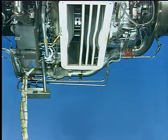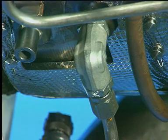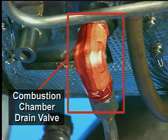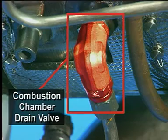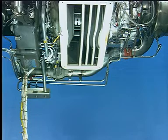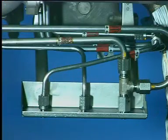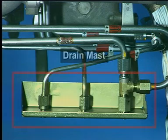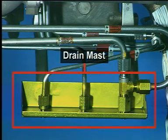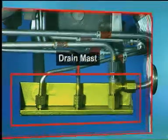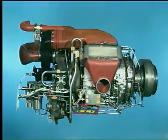The combustion chamber is drained through the combustion chamber drain valve installed at the six o'clock position on the combustion case. The drain valve is connected to the drain system manifold, which drains fluids from the air bypass plenum and the actuator and pump seal drain areas to the drain mast located at the three o'clock position on the right side of the APU.